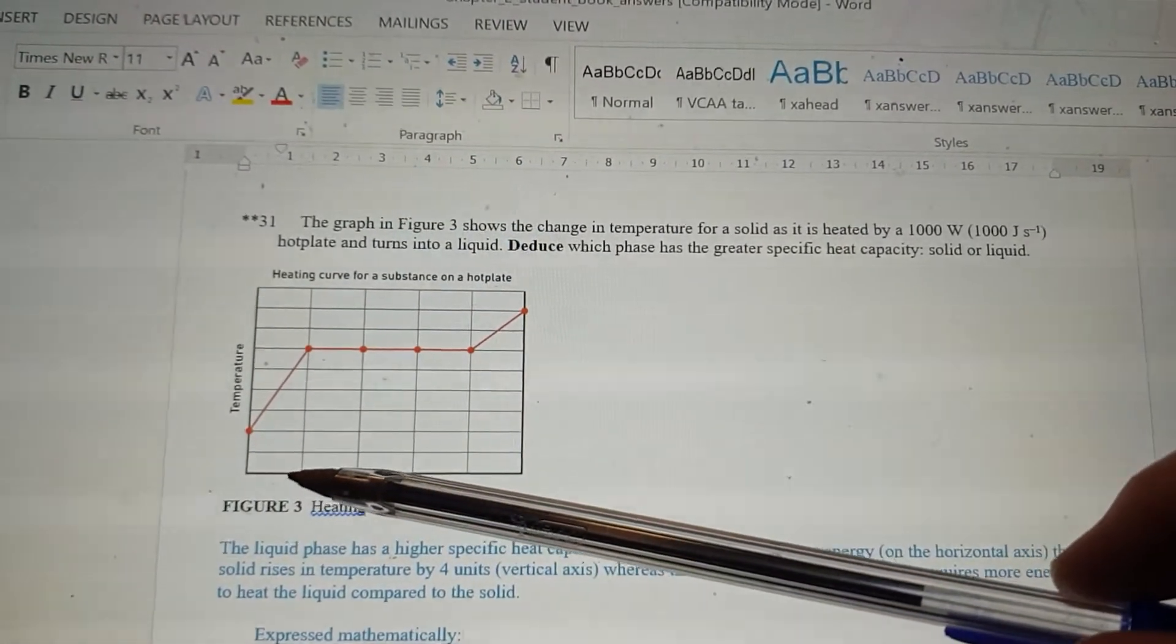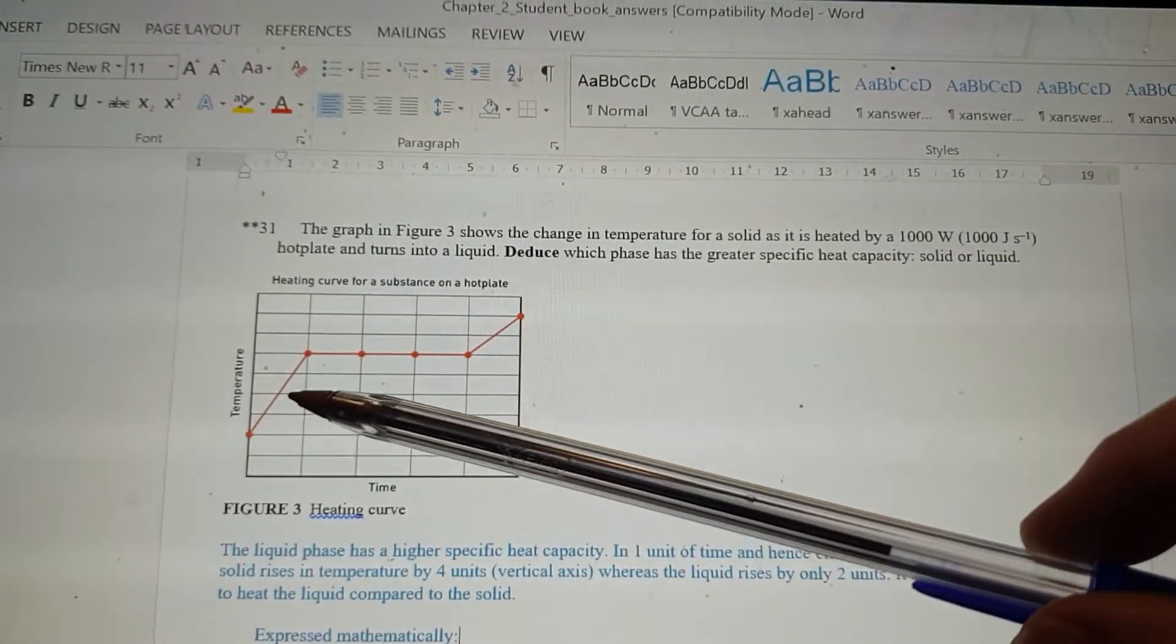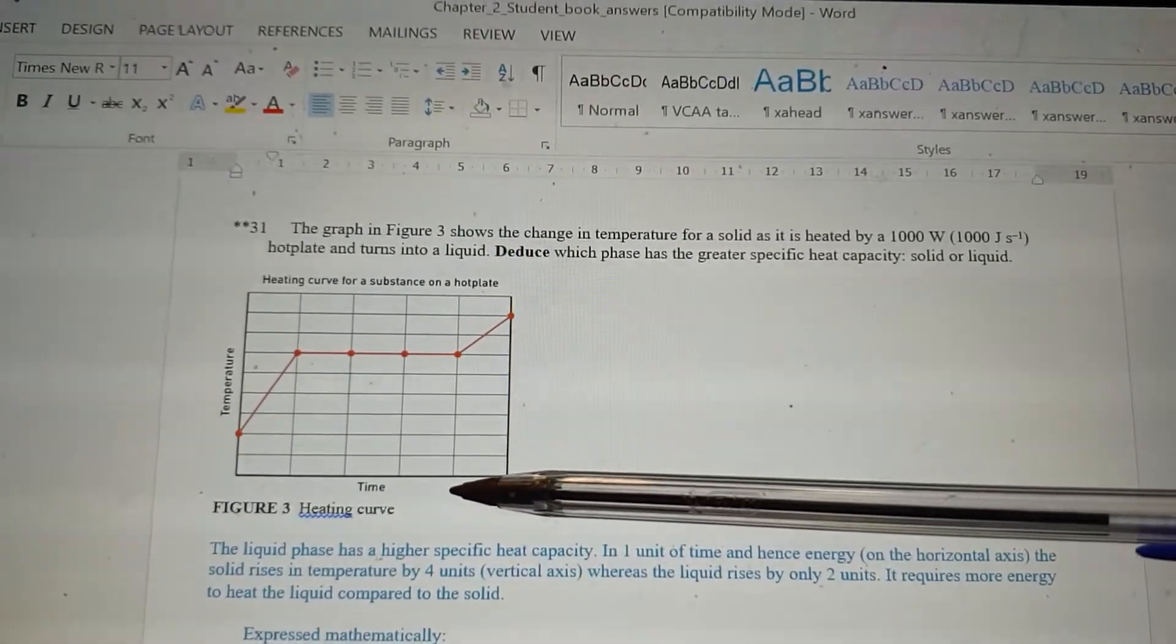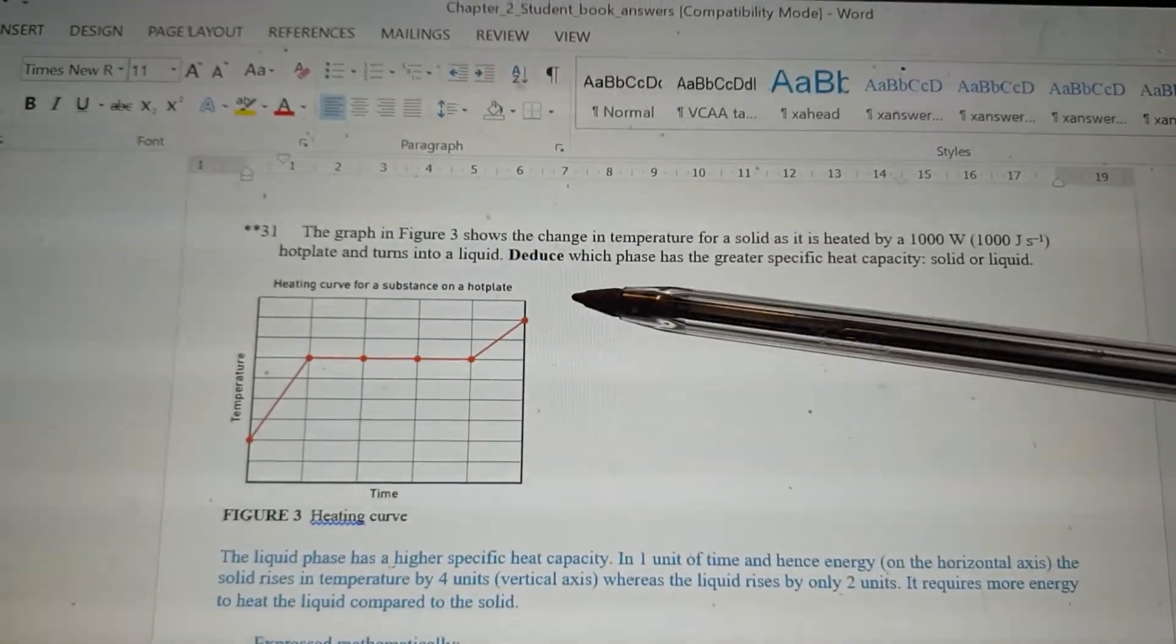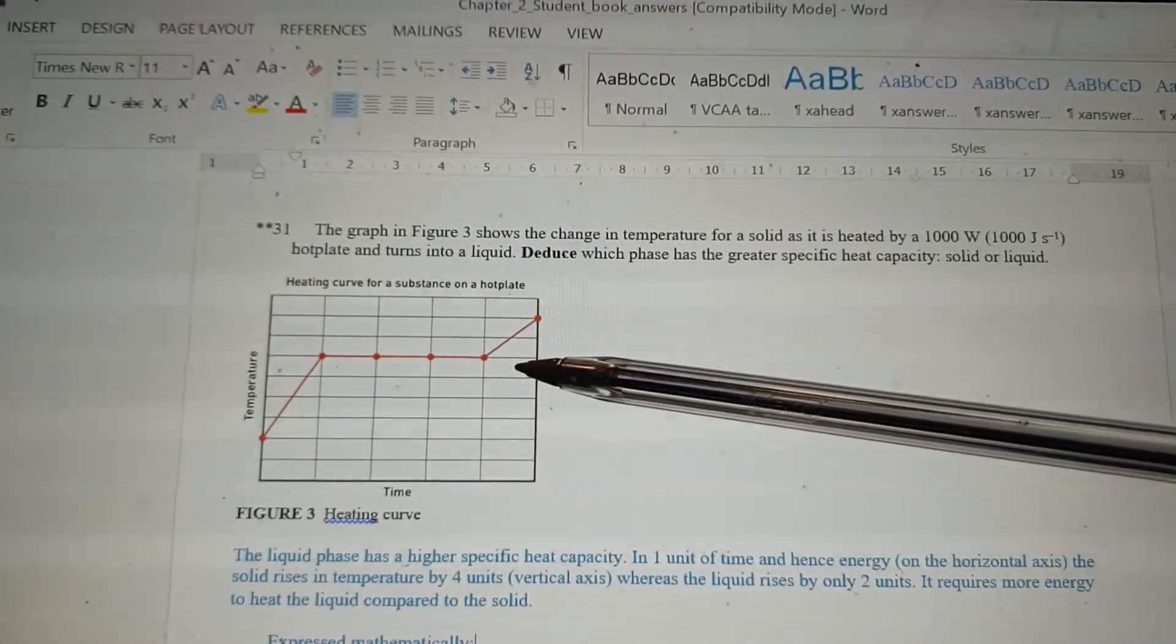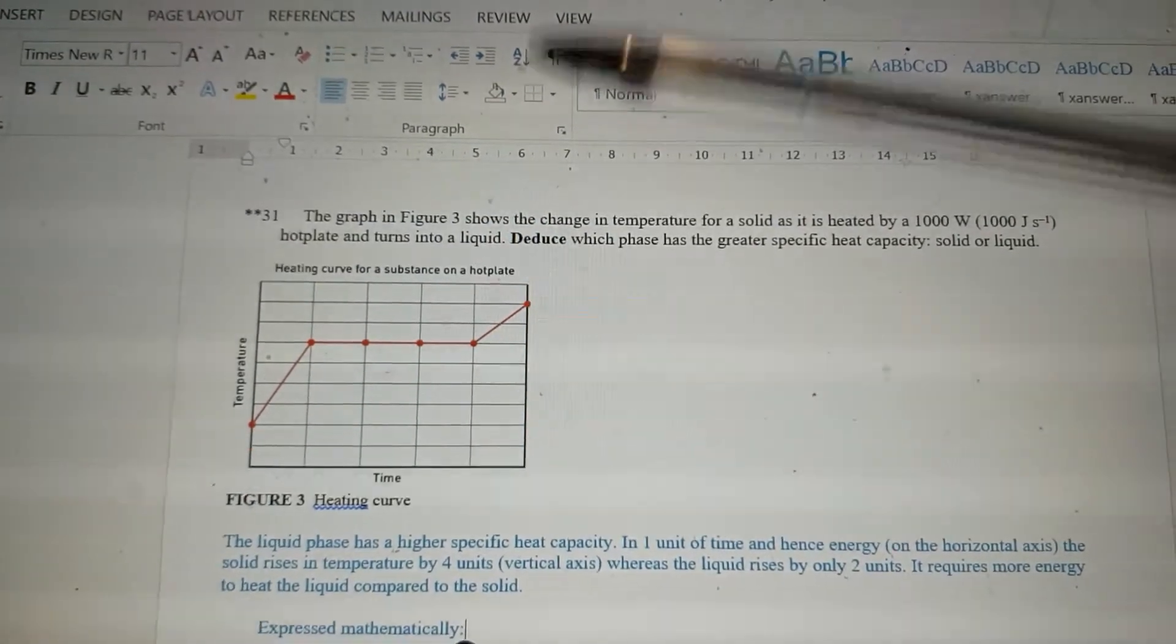So, in one unit of time, when it was a solid, it went up 1, 2, 3, 4 units of temperature. When it was a liquid, in one unit of time, because the heat is being supplied evenly, in one unit of time here, it only goes up 2 temperature divisions.